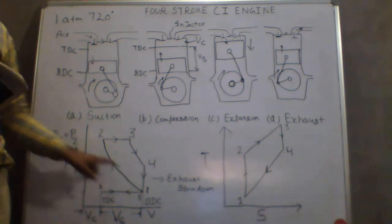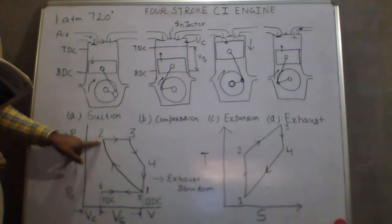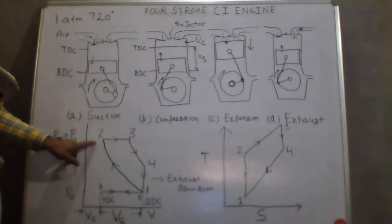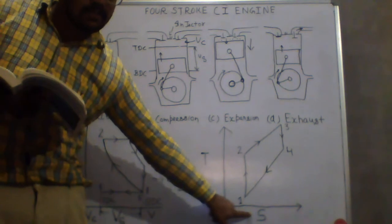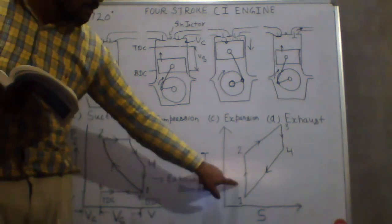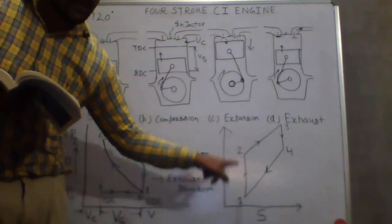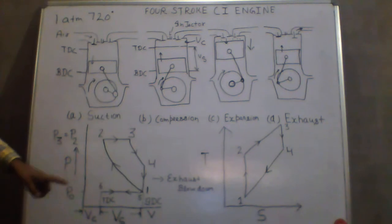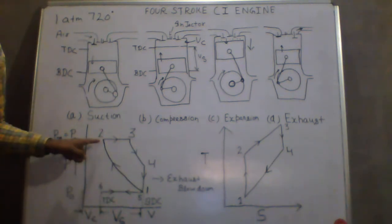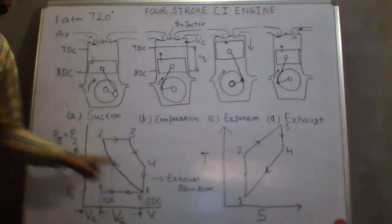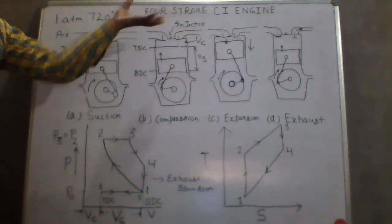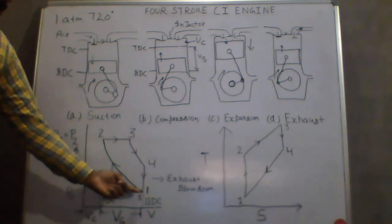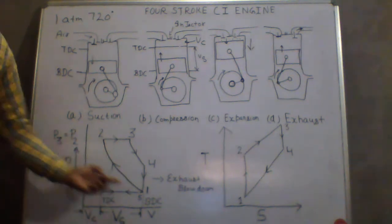The next process, 1 to 2, is the isentropic compression stroke. On the TS diagram, from 1 to 2, entropy is constant and temperature increases. On the PV diagram, from 1 to 2, volume decreases because it is a compression stroke — whenever you compress something, volume decreases. Pressure increases from 1 to 2.